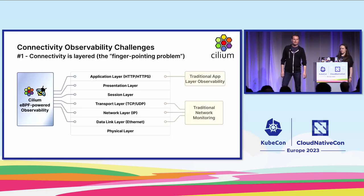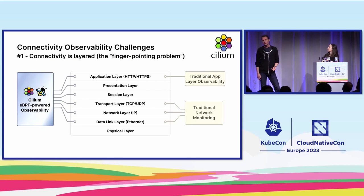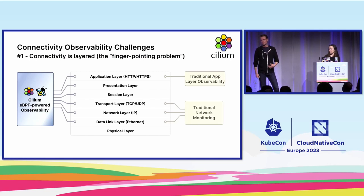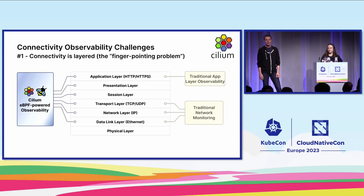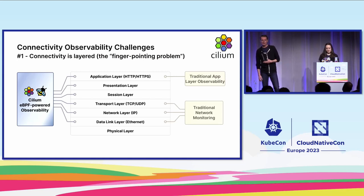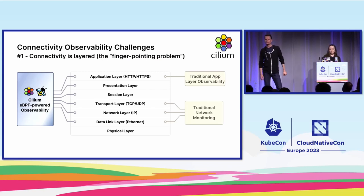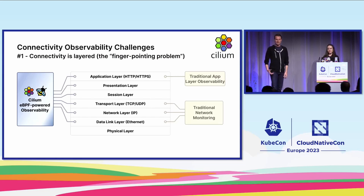Let's talk about some of the observability challenges. What we see a lot in the field is that customers struggle with troubleshooting — for example, when a user reports slow responsiveness of their application. An application team gets reports of users saying the application doesn't respond or returns errors, and then the application team most likely will blame the network. However, the network or platform team may look at the platform and say it's fine, no CPU contention, no latency. The point is that networking is a layered solution — networking might only look at layer 3, layer 4, layer 2 — while an application team is only interested in layer 7. So it's hard to track where the real issue is, and that's what we call the finger-pointing problem, and that's what we're trying to solve.